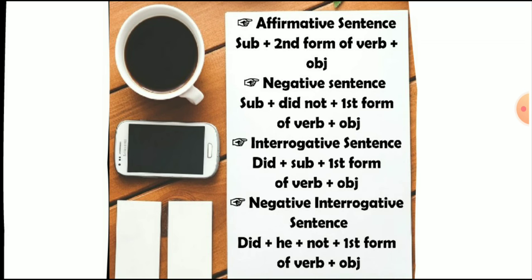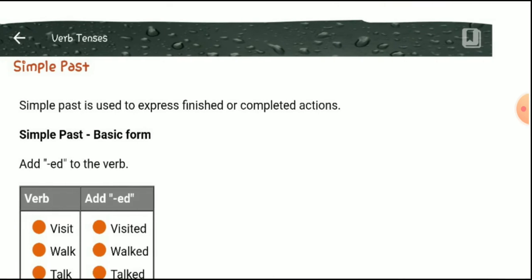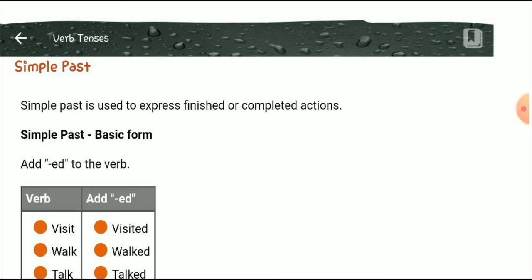The simple past is used to express finished or completed actions. The basic form is: add 'ed' to the verb. For example, the verb 'visit' will be converted into 'visited'. We add 'ed' after the final consonant — in the word 'visit', the consonant is 't'.